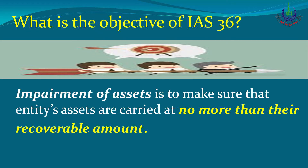What is the objective of IAS 36? The basic objective is: Impairment of Assets is to make sure that entities' assets are carried at no more than their recoverable amount. Any entity cannot show its assets at more than their recoverable amount. If carrying value exceeds recoverable amount, the entity must carry out impairment and book the impairment loss — reduce the asset to its recoverable amount.